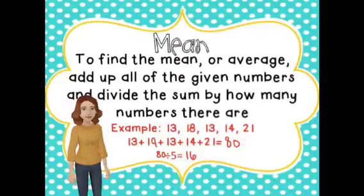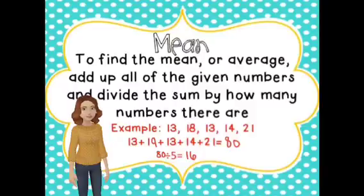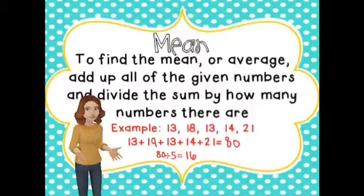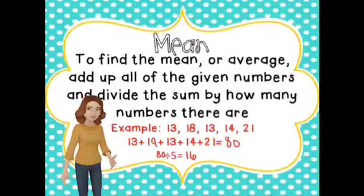Mean. To find the mean or average, add up all the given numbers and divide the sum by how many numbers there are. The given numbers in this example are 13, 18, 13, 14, and 21.